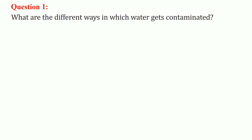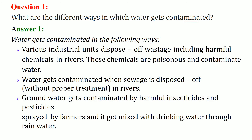What are the different ways in which water gets contaminated? The major one is the disposal from various industrial units, because these are very harmful chemicals that come out of the industrial units and they directly go into the rivers. These chemicals are very poisonous and they contaminate the water.